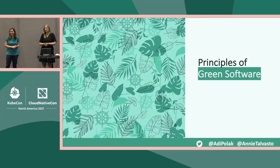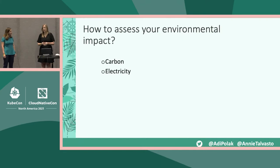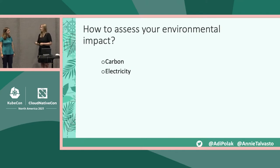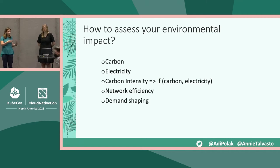Now moving on to the principles of green software and how to assess your environmental impact. There are a few basic things: carbon and electricity. This connects to how much carbon your compute emits, and how much electricity is needed to run your software. The thing that's not often discussed is that it's not actually the net amount produced that matters as much as the value you get for that output. This connects to carbon intensity, which is a function that takes into consideration your carbon units and your electricity units — one of the functions you might want to optimize for.